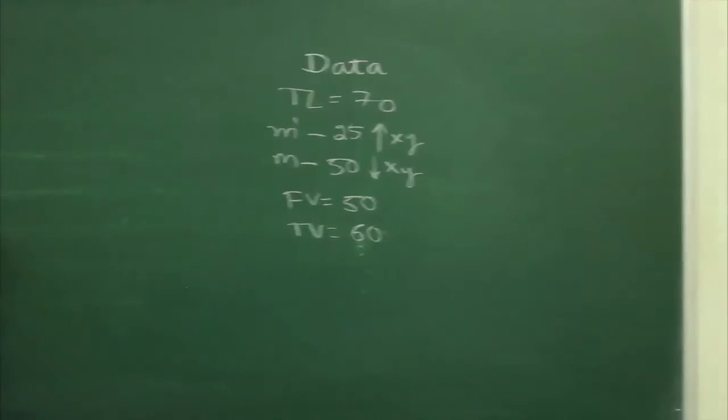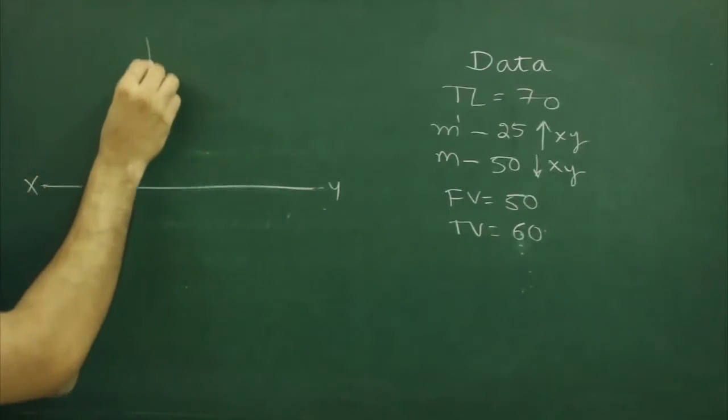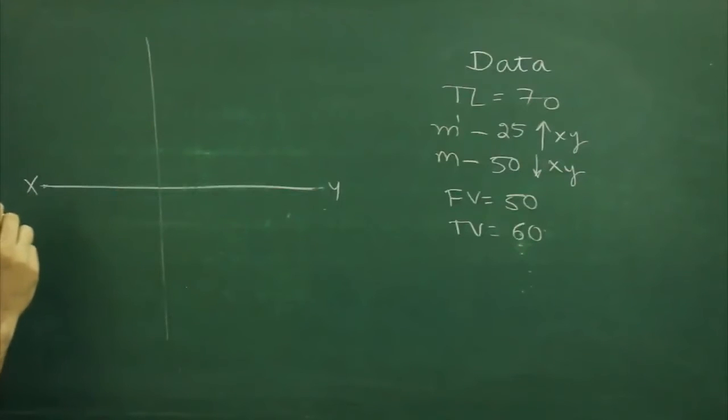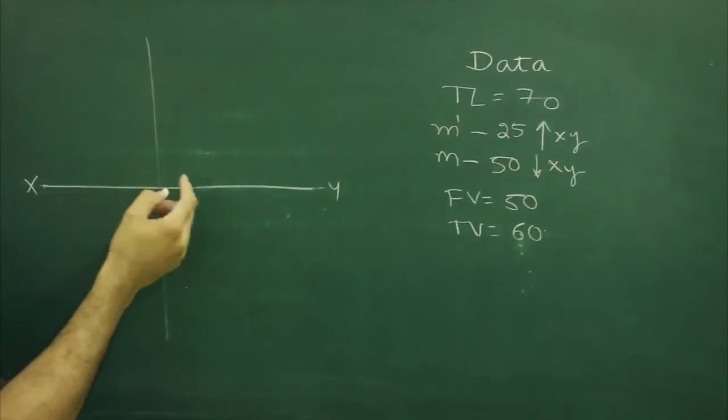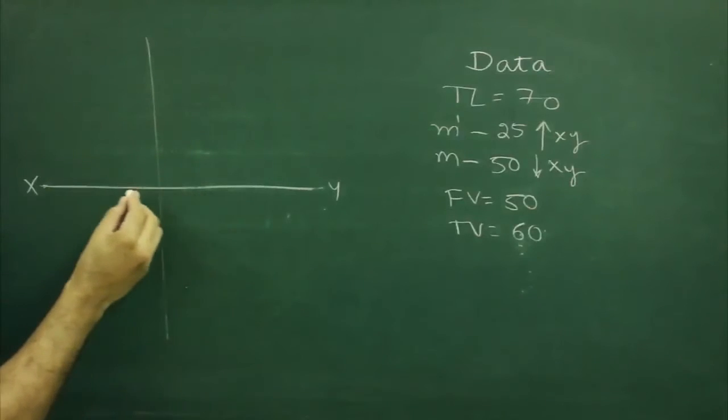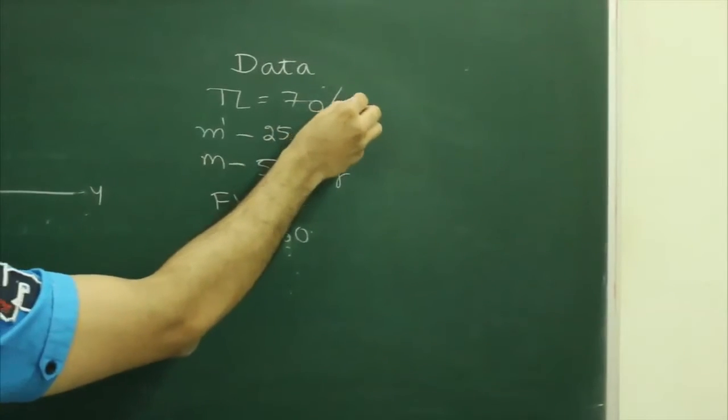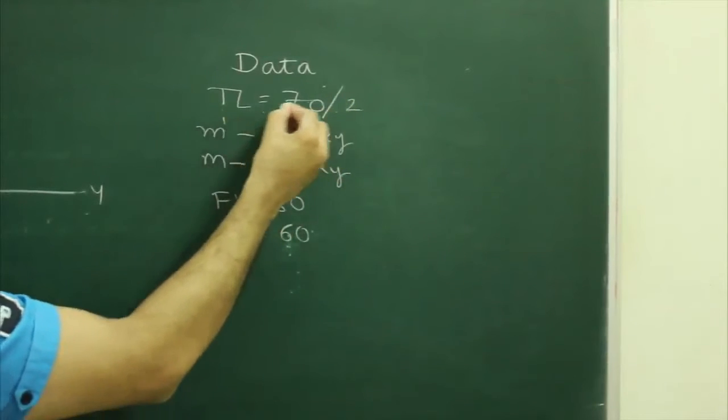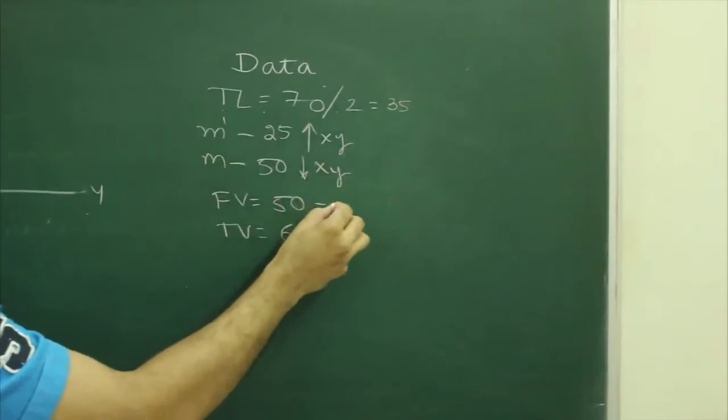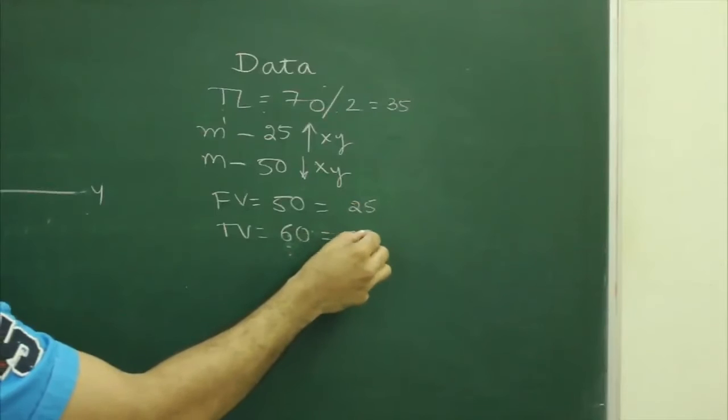Now first we will draw the xy line. If you see, we are at the midpoint. The midpoint divides everything by 2. If you take true length, it will be 35. Front view it will be 25, top view it will be 30.